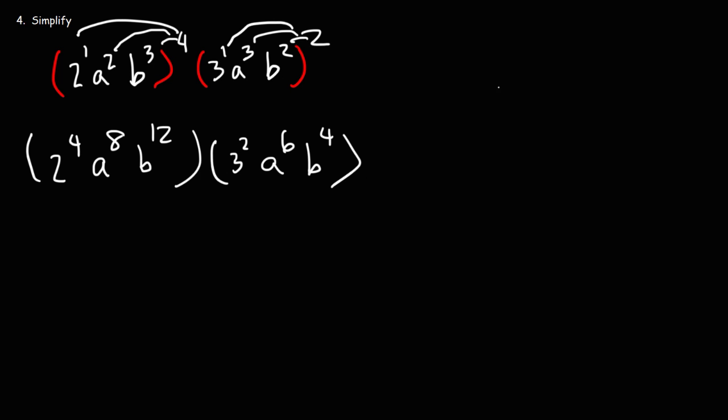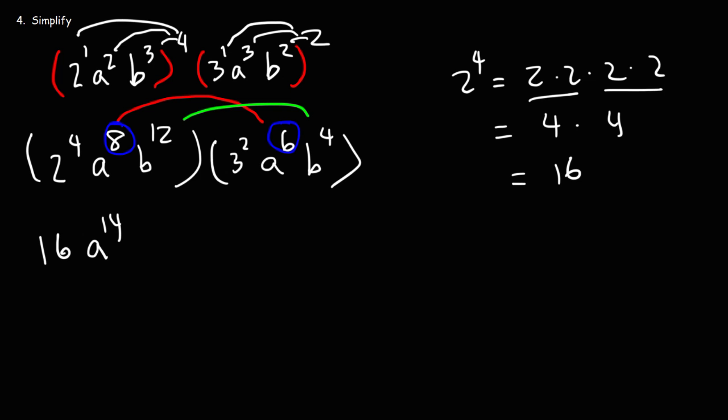Now 2 to the 4th power, we're multiplying four 2s together. 2 times 2 is 4, and then 4 times 4 is 16. So we can replace 2 to the 4th with 16. A to the 8th times A to the 6th, we need to add the exponents. 8 plus 6 will give us 14. B to the 12th times B to the 4th, we're going to add 12 plus 4 and that's going to give us 16. 3 squared, that's 3 times 3, that's 9. Now we need to multiply 16 by 9.